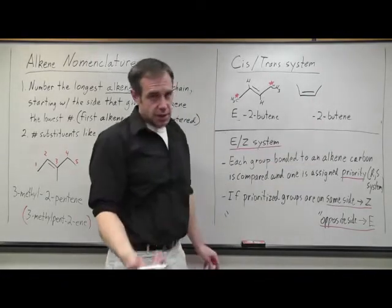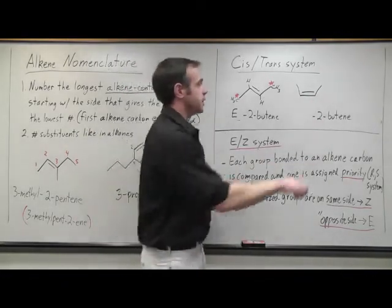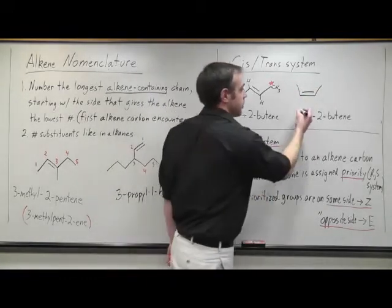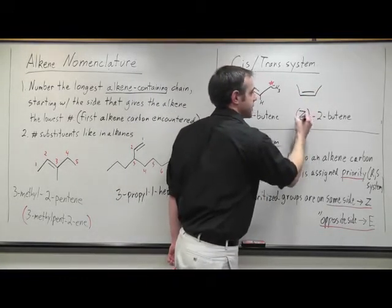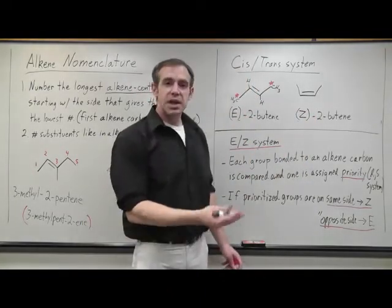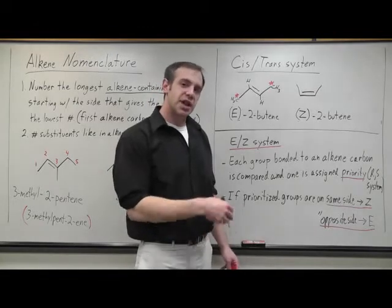Over here, you can assign priorities the same exact way. You'll assign priorities such that these two groups get the priority, and they're on the same side of the molecule. So this is Z-2-butene. E and Z will always go in parentheses, just like R and S do.